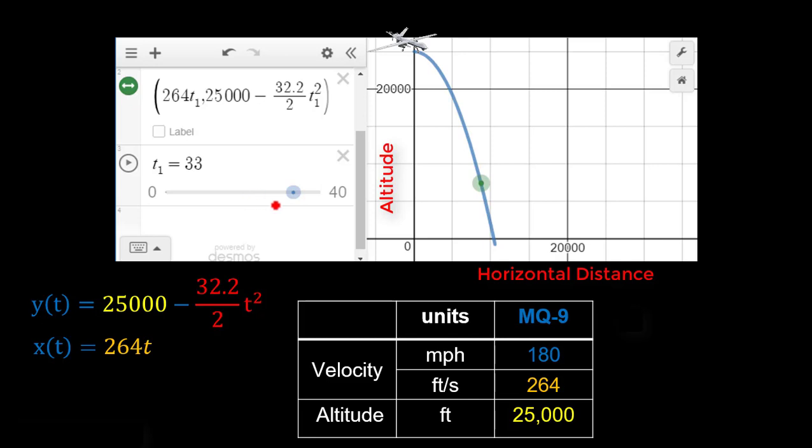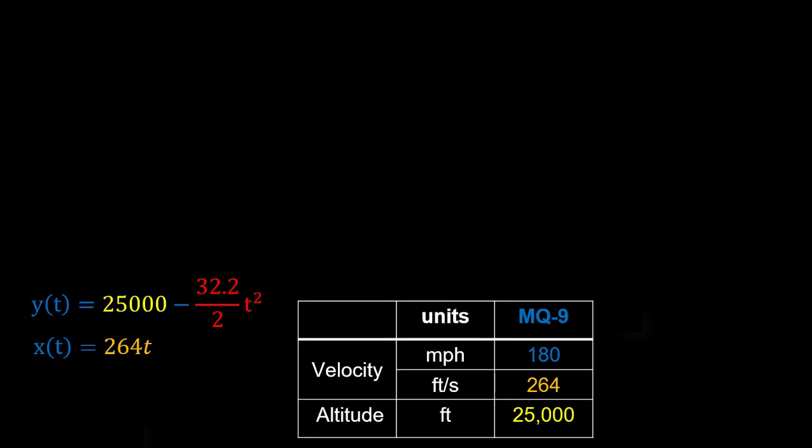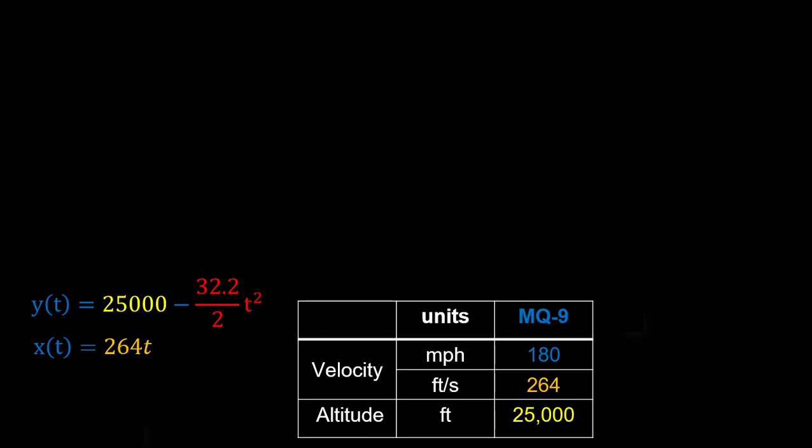So this is the nice thing about a parametric equation is that for any T value, I can see what is my X and Y. But we don't have to leave this in terms of T. We can actually convert it into just X and Y, and it's really not too bad to do that. We just notice that here we have X in terms of T, so we can just kind of reverse that and solve for T in terms of X.